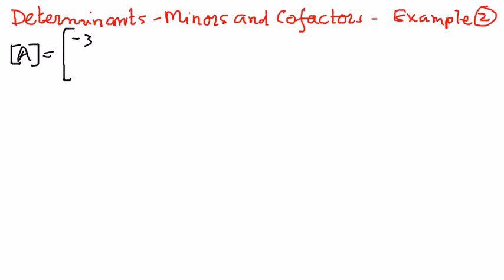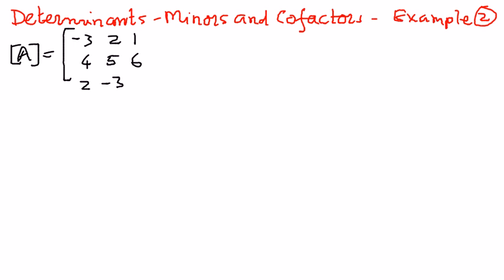The elements of matrix A are: negative 3, 2, 1, 4, 5, 6, 2, negative 3, and 1.